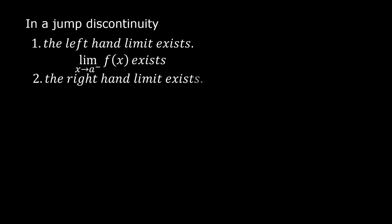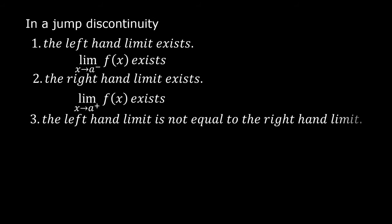In a jump discontinuity, number one, the left-hand limit exists. That is, the limit of f(x) as x approaches a from the left exists. Number two, the right-hand limit exists. That is, the limit of f(x) as x approaches a from the right exists.